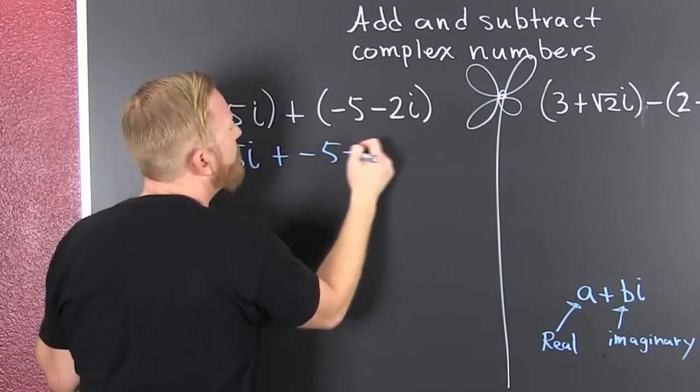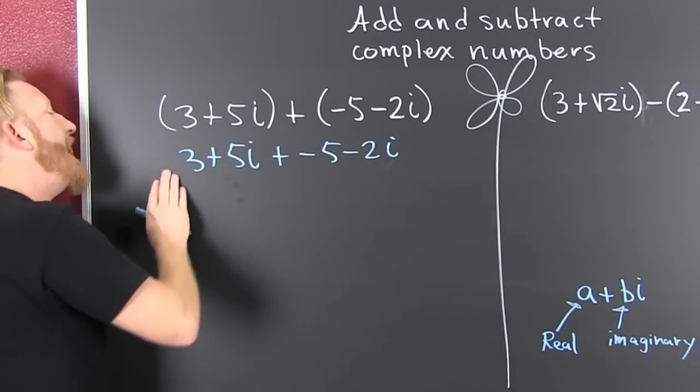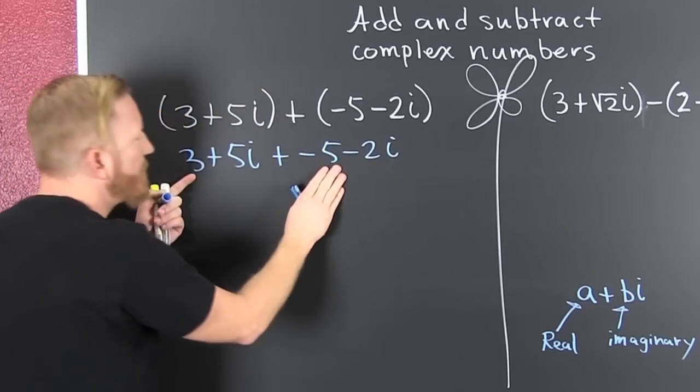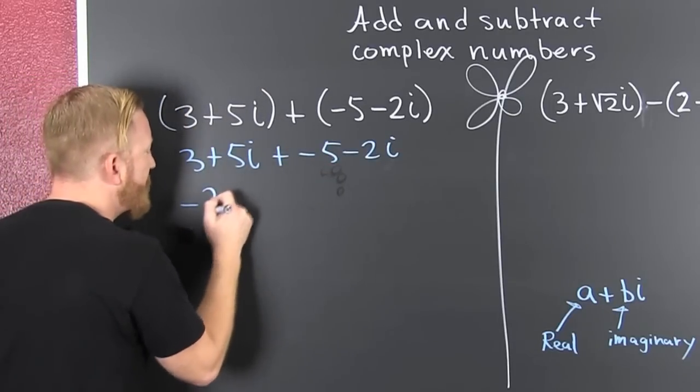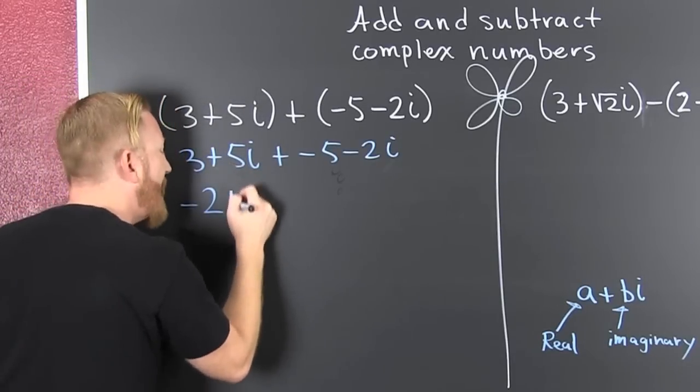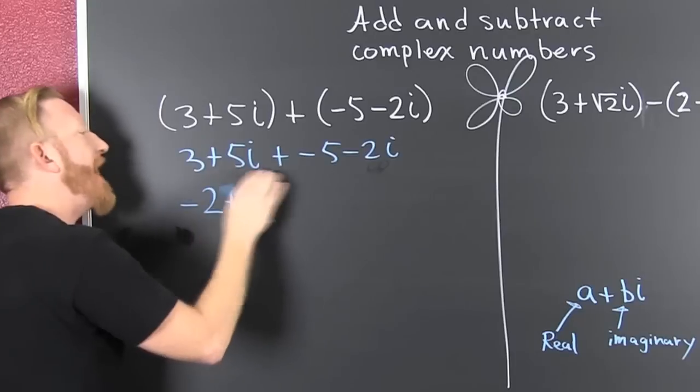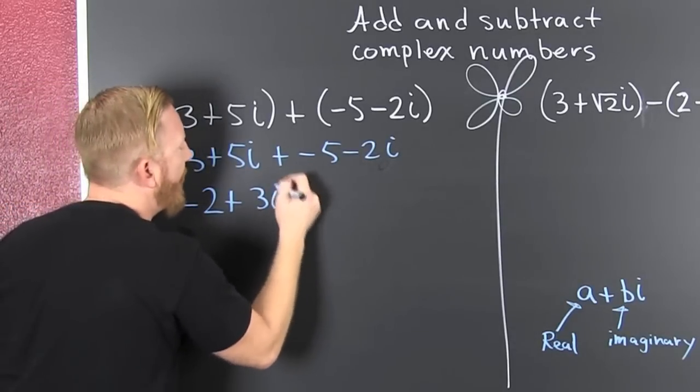Then I go and I add the real parts, three and the minus five, and get a minus two. Then I go and I add the imaginary parts and I got five minus two is three i.